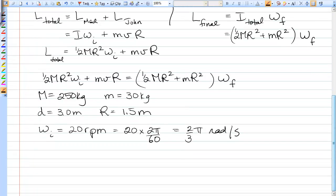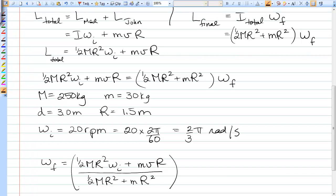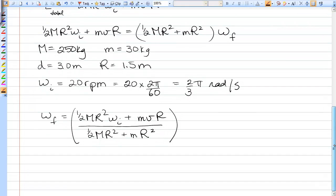So we're ready to solve for omega F. Omega F will become half MR squared omega I plus MVR all divided by half MR squared plus mR squared. We can see that one R cancels, so I may as well cancel an R top and bottom and see what we have here. And then I'm going to factor out an R on the bottom just to make it a little easier to compute. And that's our expression for omega F.